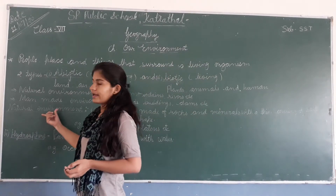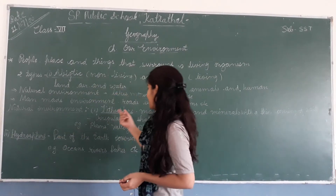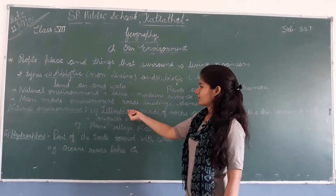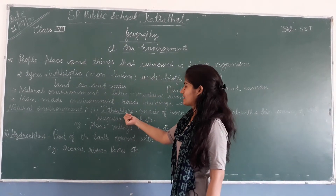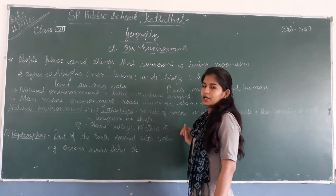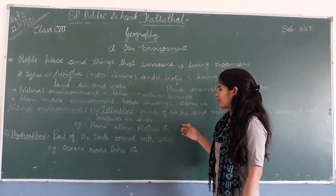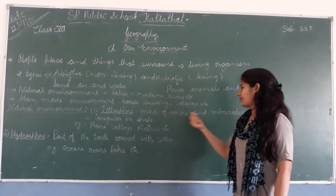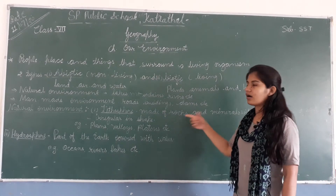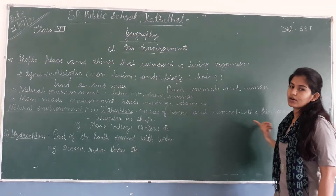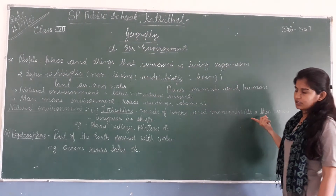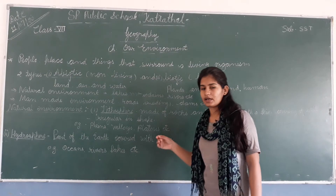The natural environment has four parts. The first is the lithosphere. The lithosphere is the upper part of the Earth, which is made of rocks and minerals. It has a layer of soil covered over it.